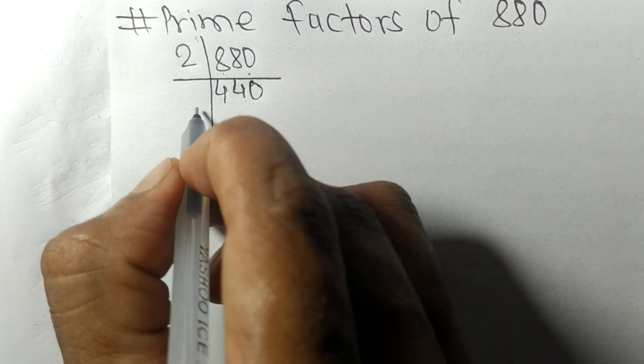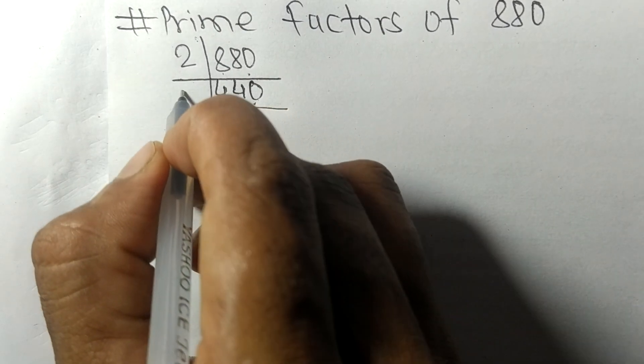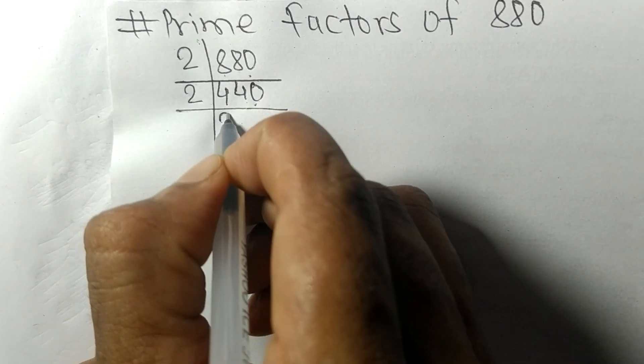Again it has 0 at the end, so it's divisible by 2. 2 times 2 is 4, 2 times 2 is 4, 2 times 0 is 0. We get 220.